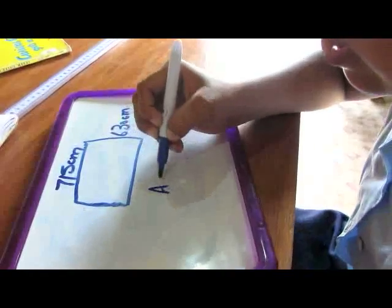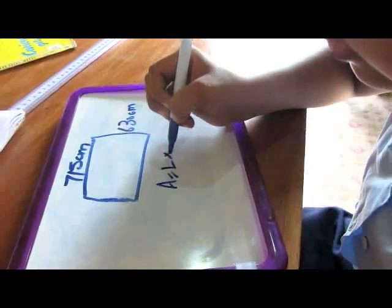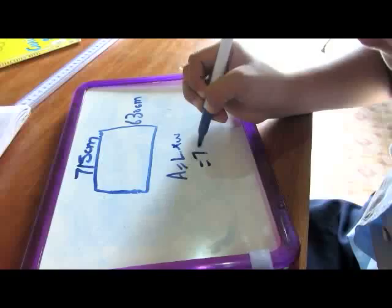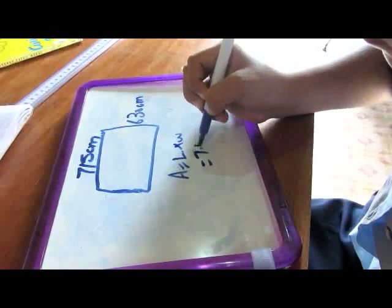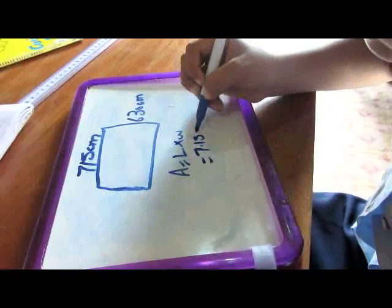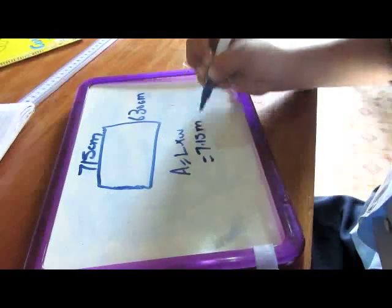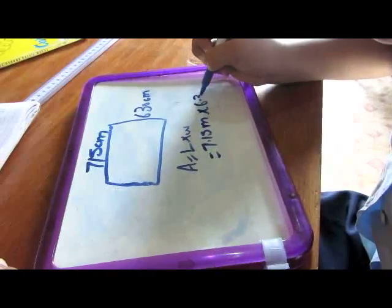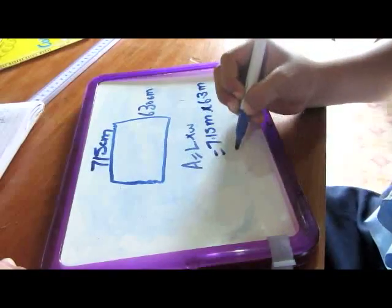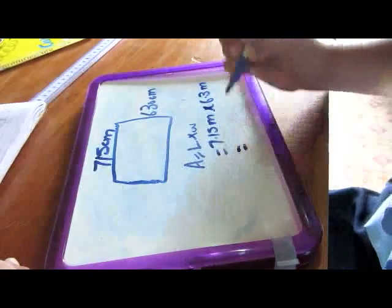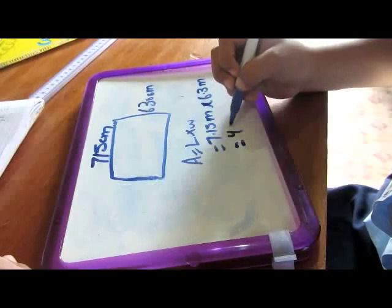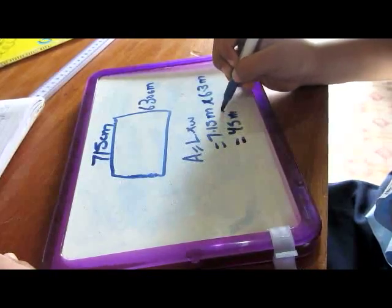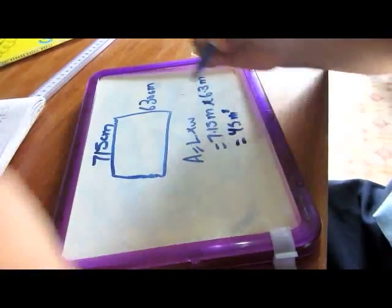Area equals length times width, equals seven point one five meters times six point three meters, equals forty-five square meters.